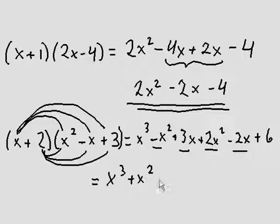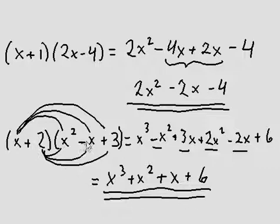3x minus 2x is just x. And the 6 comes down because there are no other numbers by themselves without an x. So that's it. That's the expanded form of these two polynomials being expanded together.